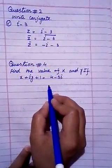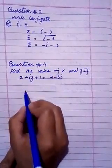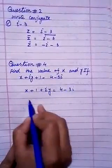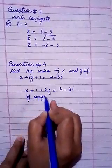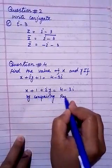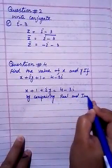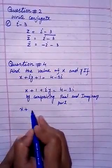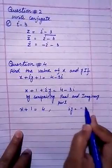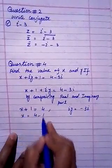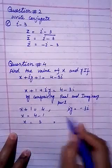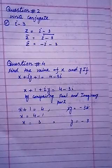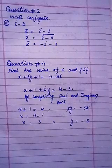Question number 4: Find the value of x and y. First combine the real part: x plus y equals 1, plus iota y as it is. Now compare real and imaginary parts. Comparing: real part gives x plus 1 equals 4, and imaginary part gives iota y equals minus 3 iota. So x equals 4 minus 1, therefore x equals 3. Iota cancels with iota, giving y equals minus 3. Now you have found the values of x and y. Practice Exercise 2.4 and Exercise 2.5. Allah Hafiz. Thank you.